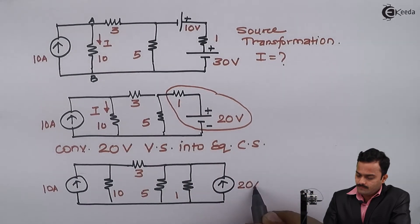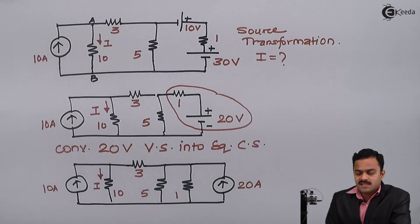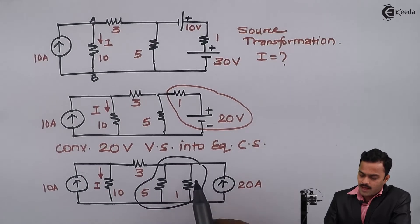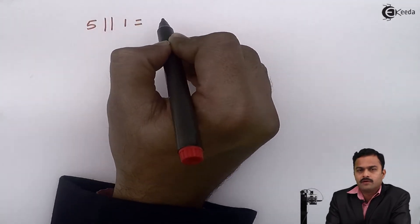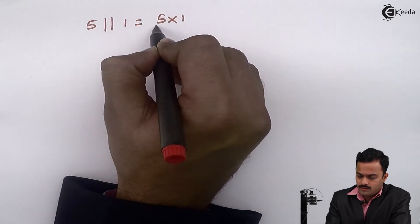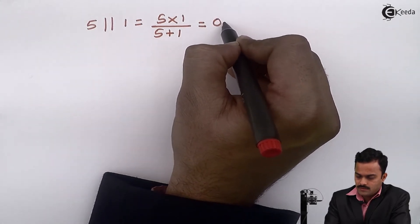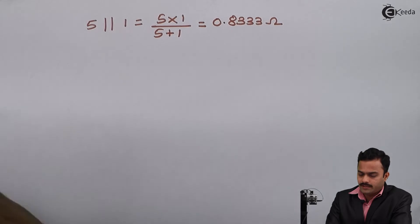We need to find current I. Whenever converting a source, the circuit gets modified. The modification here is that 5 ohm comes in parallel with 1 ohm. The equivalent resistance is 5 multiplied by 1 divided by 5 plus 1, which gives 5 by 6 = 0.8333 ohm. I will redraw the circuit with this result.